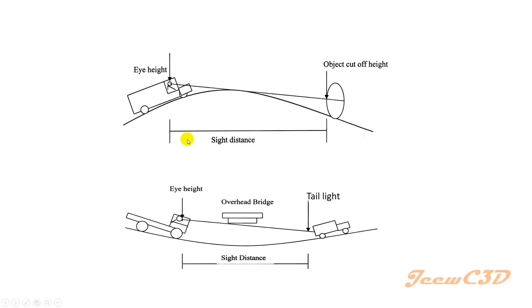This image shows why sight distance is important on a curve — what we call a crest curve on a road. A driver coming from one side has an object on the other side of the curve. The line of sight is the straight line between them, and the distance measured along the road is called the sight distance. To apply sight distance, you need to calculate it properly.